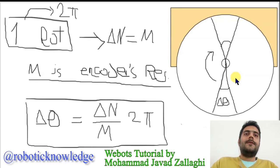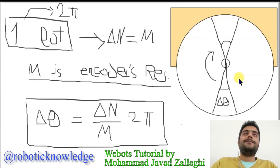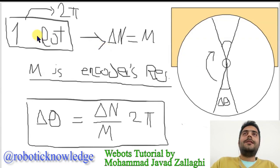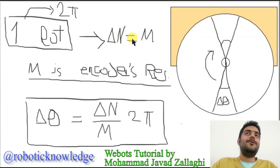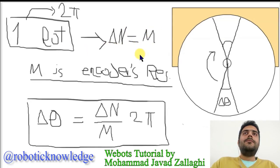Resolution is the number of ticks, the number of steps of an encoder. We can use that: one rotation is equal to the change in feedback of the encoder delta N, and from the theory we know that it's equal to the resolution of the encoder, which I'm going to call M.